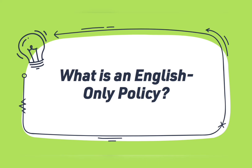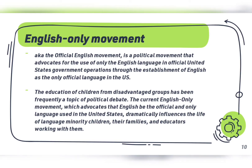What is an English-only policy? The English-only movement, also known as the Official English Movement, is a political movement that advocates for the use of only the English language in official United States government operations through the establishment of English as the only official language in the U.S. The U.S. has never had a legal policy proclaiming an official national language. However, at some times and places, there have been various moves to promote or require the use of English, such as in Native American boarding schools. The movement has come to be seen as a far-right talking point in contemporary U.S. politics and a dog whistle for racism against non-English speakers.